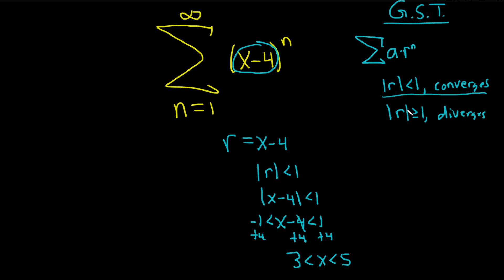These are the values of x for which the series converges. And there are no other values because these conditions are mutually exclusive. If the absolute value of r is not less than 1, then this happens and you get divergence. So these are the only values of x for which the series converges.